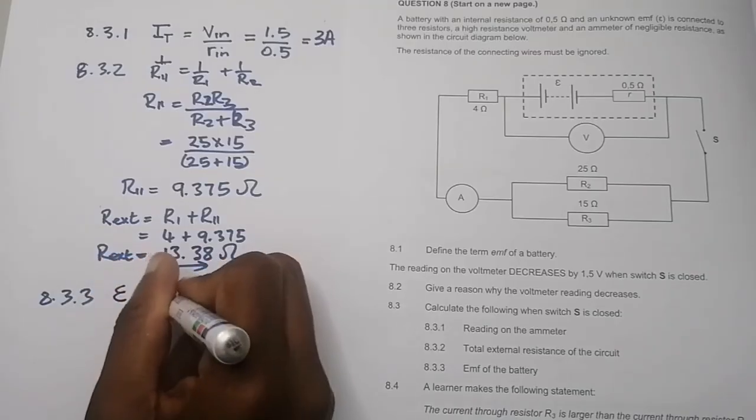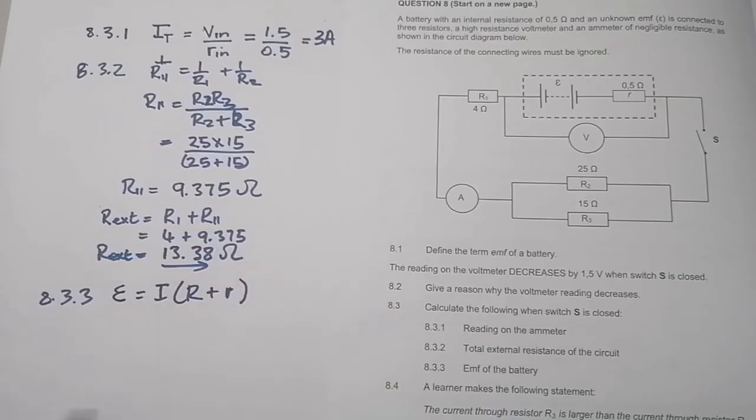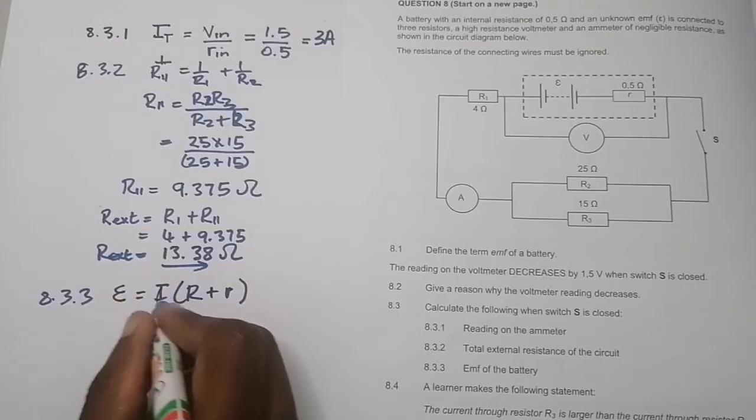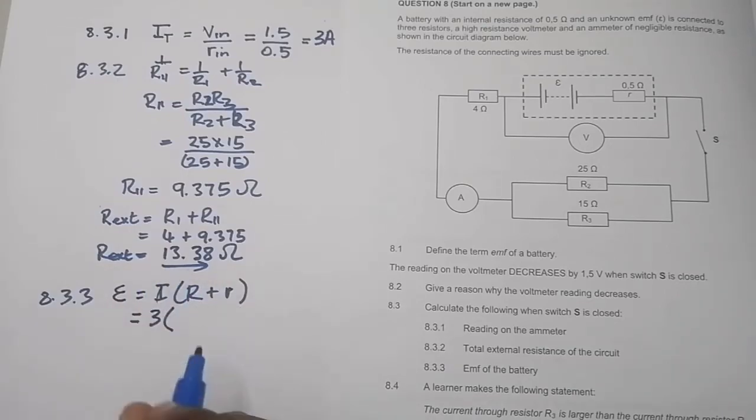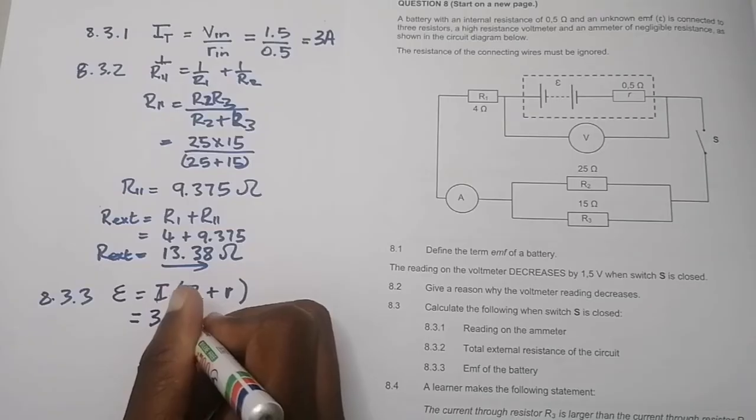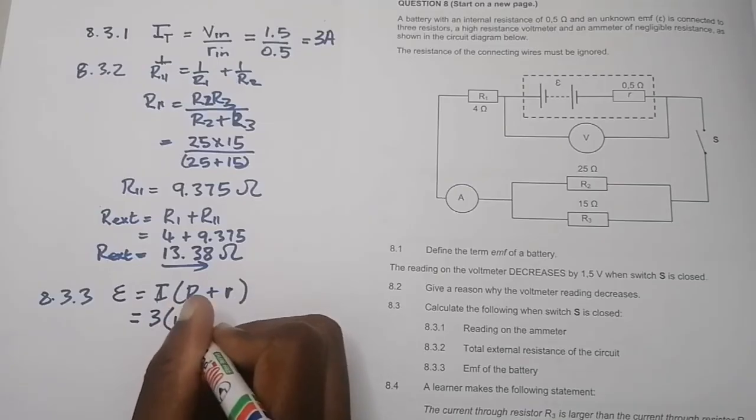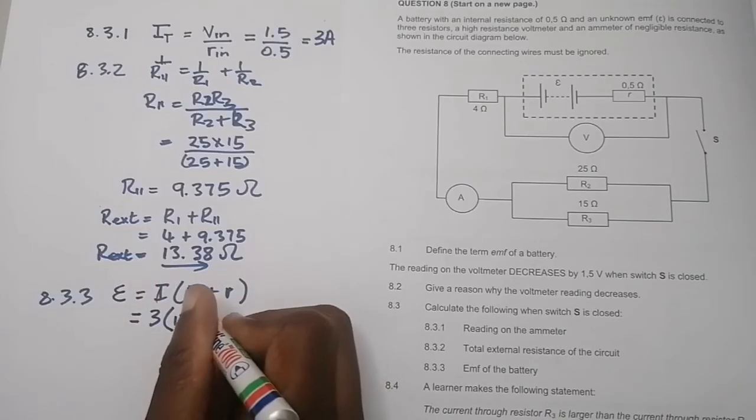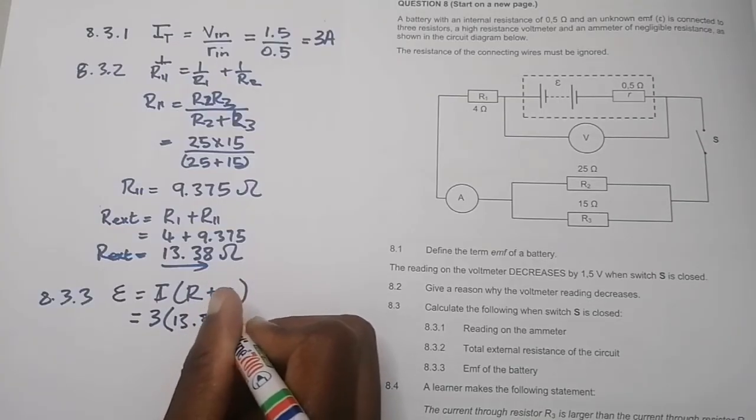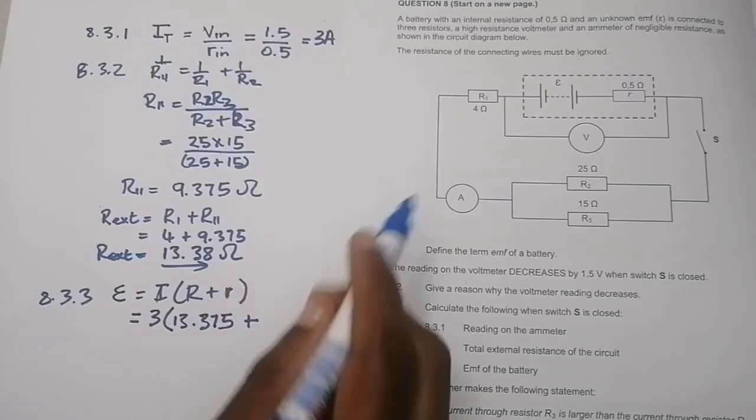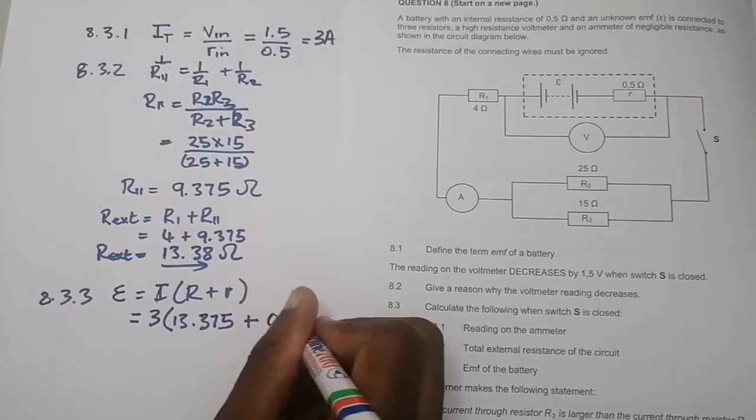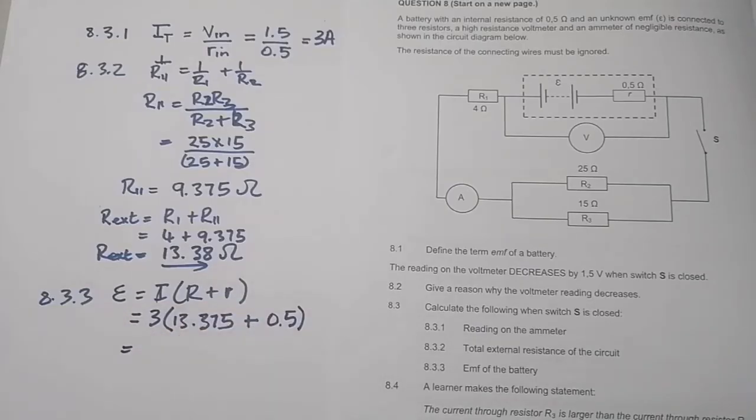We know that E total equals I times (R plus little r). Remember, the I that we use here is the total current, which is 3 amperes. We've just found the total external resistance, which is 13.38 ohms, plus our internal resistance of 0.5. The final answer I get is 41.63 volts.